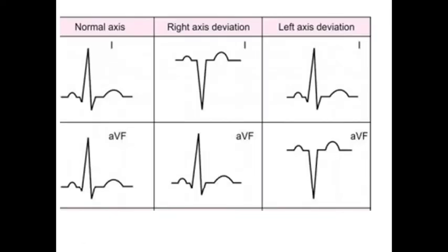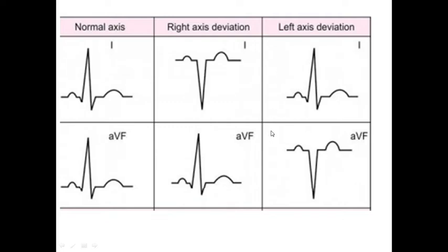Or you can use another method — assessing the QRS complex on two leads: the 1st lead and the AVF lead. If on the 1st lead there is predominance of the positive component, and in AVF also predominance of positive component — positive and positive — this gives us normal axis. If your patient has predominance of negative component on the 1st lead and predominance of positive component on the AVF lead, it will be right axis deviation. For left axis deviation, your patient has predominantly positive component on the 1st lead and negative on AVF.